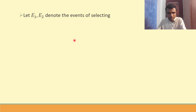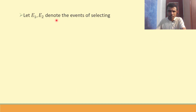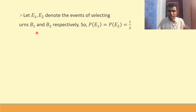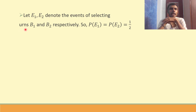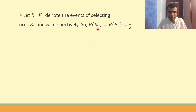This is an example sum from the textbook, so I'm taking the same terminology used there. Let E1 and E2 denote the events of selecting urns B1 and B2. There are 2 bags; I can either select bag 1 or bag 2. Out of 2 I'm selecting 1, so P(E1) = 1/2 and P(E2) = 1/2.